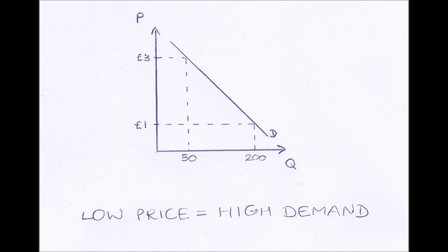If the price is low, then demand will be high. And we can see that on the curve. When the price is £1, if we draw across and then draw down, our quantity demanded is 200, which is quite high. And this is because if the price is low, then it is attractive for people to buy that good. Because it's cheap, it encourages people to go and buy that good. So therefore demand for it will be high.